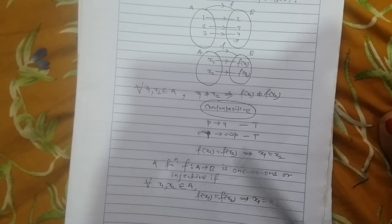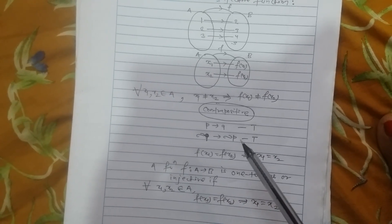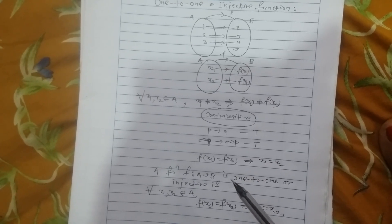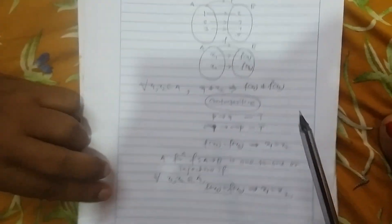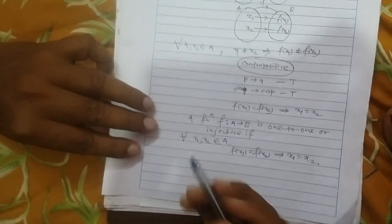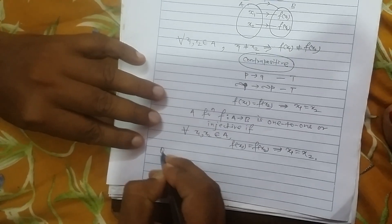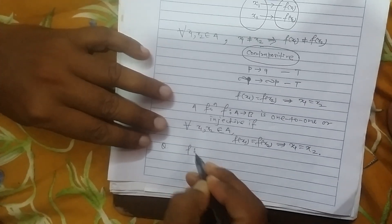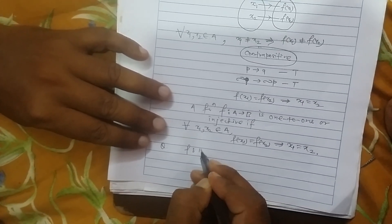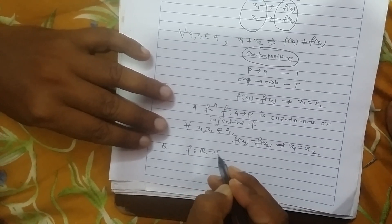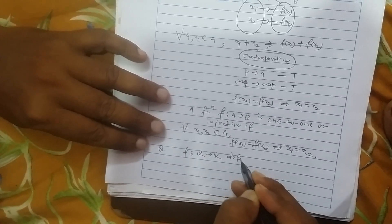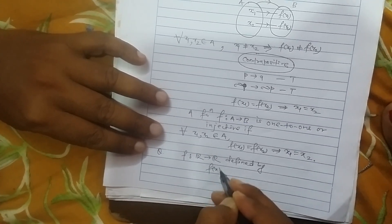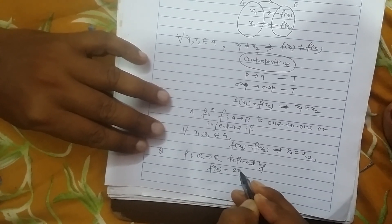Now I think you are quite clear about the definition of the 1-to-1 function. We are going to do some examples to make the concept clearer. For example one, a function f from the set of real numbers to the set of real numbers is defined by f(x) = 2x + 3.